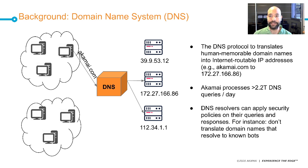For that we look at the DNS protocol. DNS is a core component of the internet, typically used to translate human-memorable domain names into internet-routable IP addresses — for instance, translating Akamai.com to an IP address. Akamai processes more than 2.2 trillion DNS requests daily. Whenever a user makes a DNS request to translate a domain name that resolves to an IP previously associated with a bot attacking CDN websites, rather than serving the DNS request, we can block it — thus protecting the user from visiting malicious content.